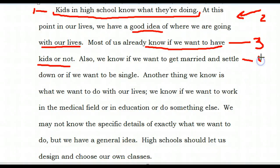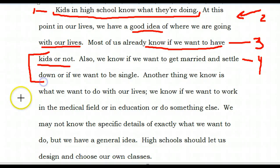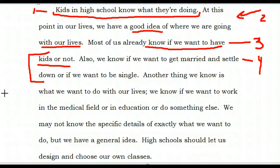Sentence number four: 'Also, we know if we want to get married and settle down or if we want to be single.' Again, we have another simple sentence here, and it's also including very simple ideas. These two sentences — three and four — may be combined, taking these two ideas together: the idea of having kids, and the idea of whether to be married or to be single. A recommendation I would make to the student is to combine those ideas but get really specific as to why. Why is it that a person who would be so young — 14, 15, 16 years old — would really know if they want to be single or married in 20 or even 40 years?